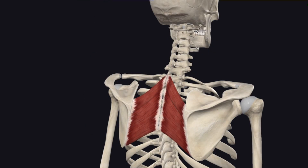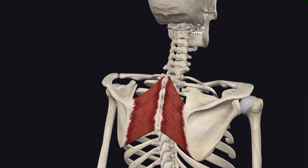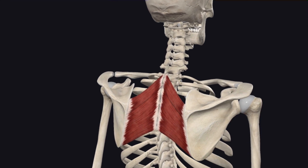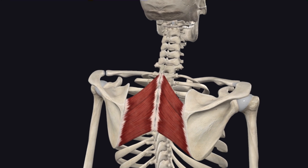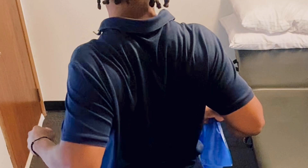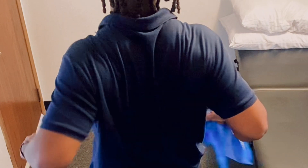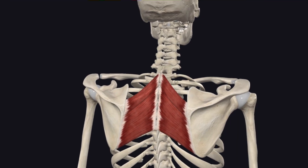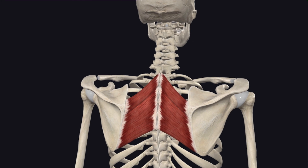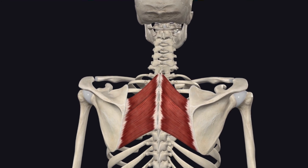Both rhomboids work together to retract the scapula, pulling it towards the spine. They also help with downward rotation and play a role in elevation of the scapula. Clinically, they're big players in posture correction — thinking about people with those rounded forward shoulders, they'd often benefit from doing that opposite movement and activating those rhomboids.